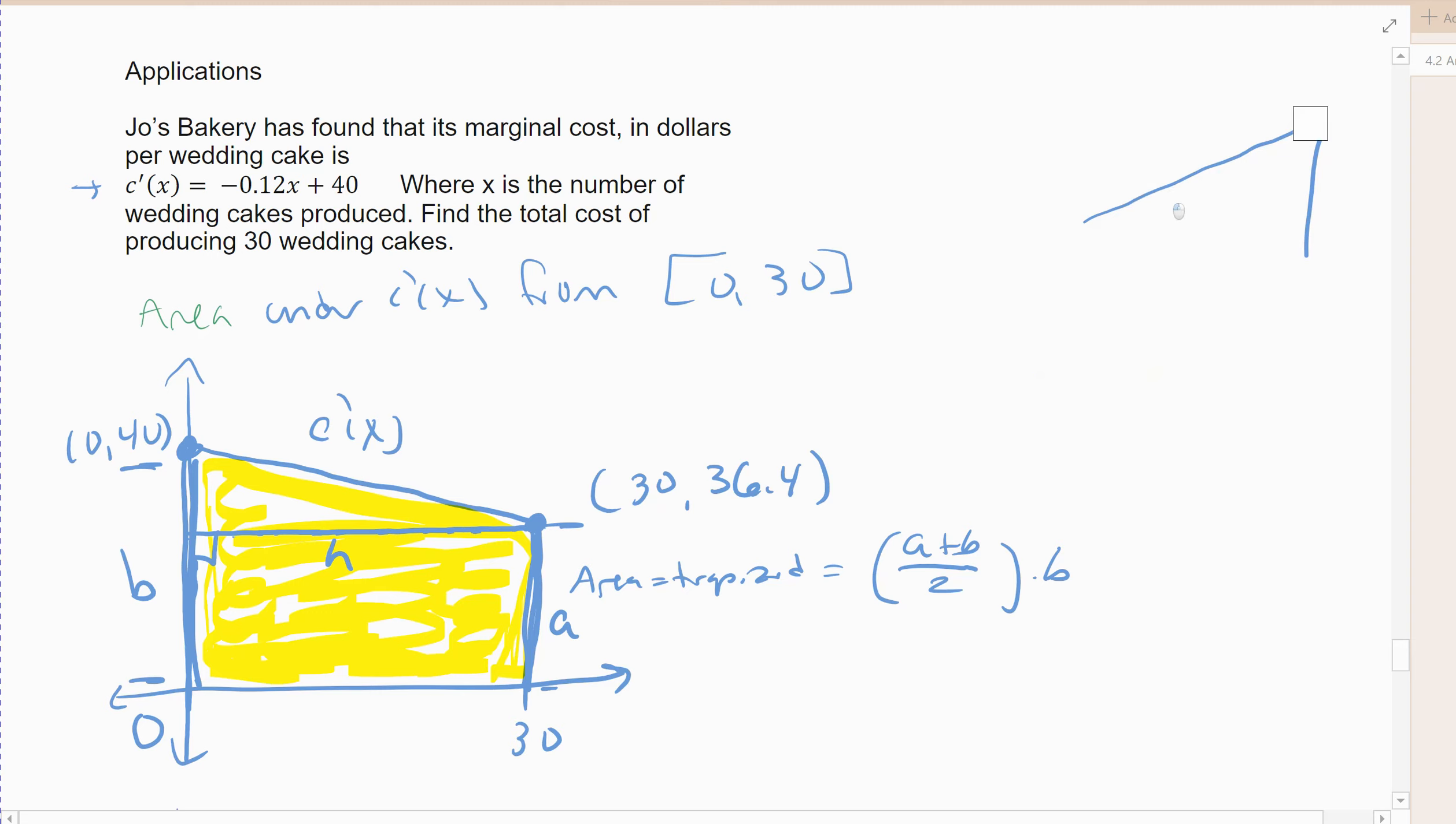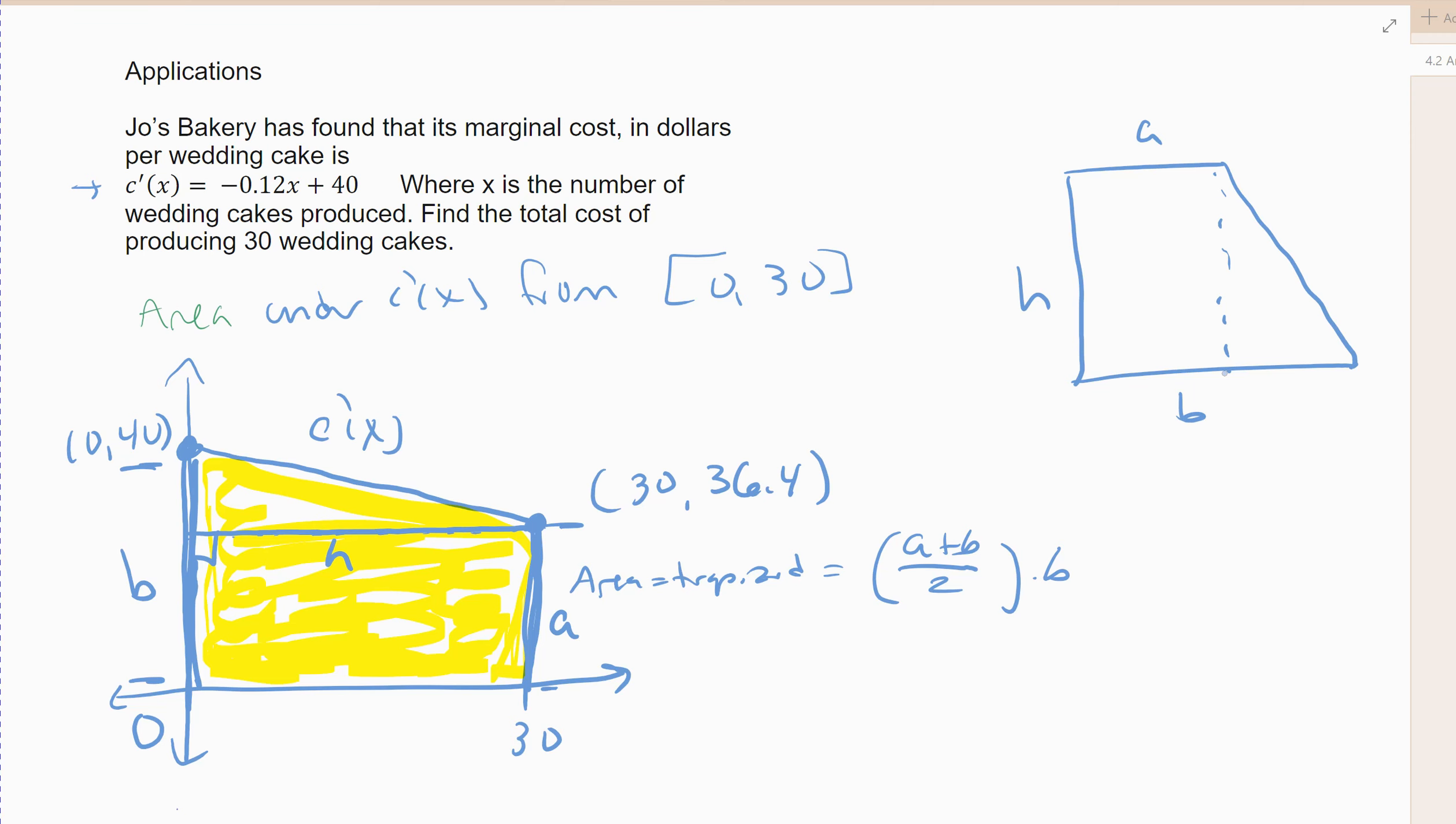All right, there's the trapezoid. This is sort of the way you look at it. This would be b, this would be a, and this would be h. All right, if you want to think about it that way. I'm going to ask this h here, same distance. All right, that's the trapezoid. All right, so the area of a trapezoid would be top base plus bottom base divided by 2 times the height of the trapezoid. All right, the height of the trapezoid is the distance between the two bases, the a and b.